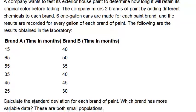Calculate the standard deviation for each brand of paint. Which brand has more variable data? These are both small populations. So the fact that it says these are populations means we can use the population version of the formula for standard deviation. To calculate standard deviation, we need to know three things: all the values for x, which is our data values from this table for Brand A and Brand B.